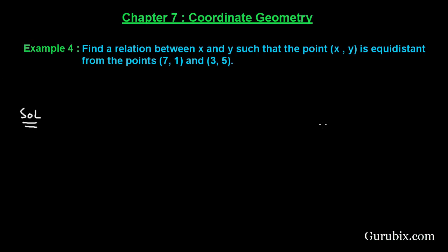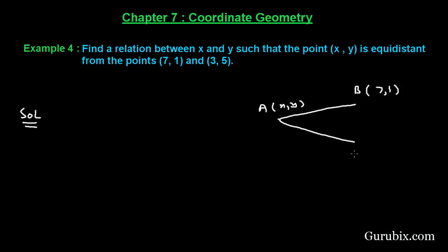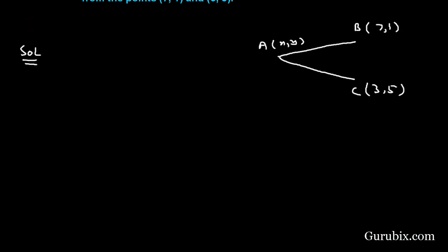Let us draw a figure. Suppose this is the point A whose coordinates are X and Y, this is the point B whose coordinates are 7 and 1, and here is the point C whose coordinates are 3 and 5. Now we shall find the distance AB.